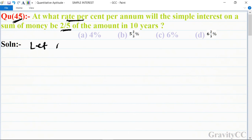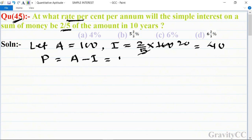First, let the amount be rupees 100. So its interest is according to the question 2/5 of amount, so 2/5 times 100 equals 40. And principal is equal to A minus I, 100 minus 40, so 60.